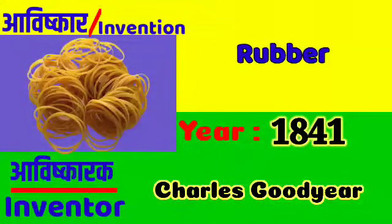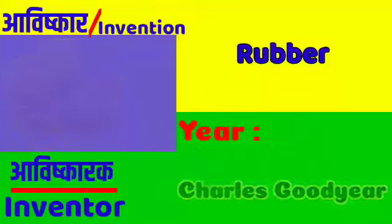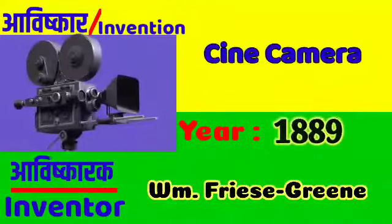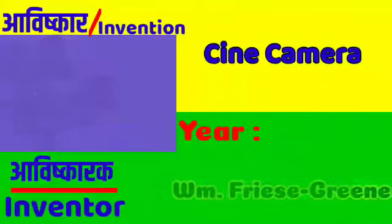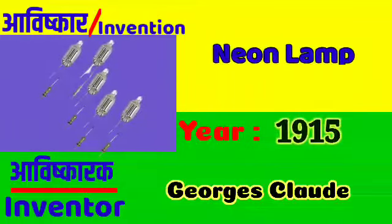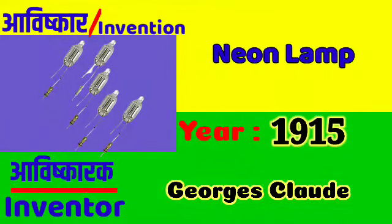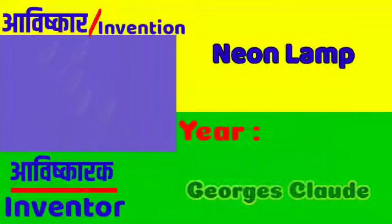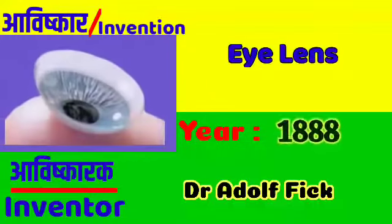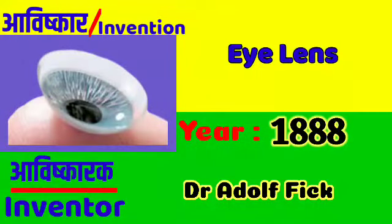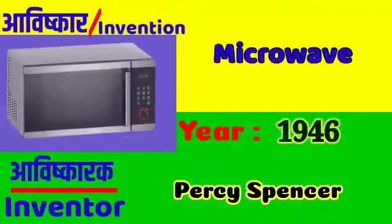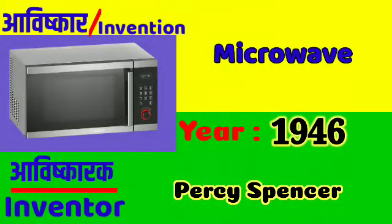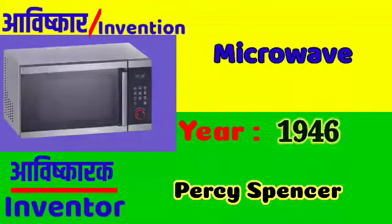Vulcanized Rubber: Charles Goodyear in 1841. Cine Camera: William Friese-Greene in 1889. Neon Lamp: Georges Claude in 1915. Eye Lens: Dr. Adolf Fick in 1888. Microwave: Percy Spencer in 1946.